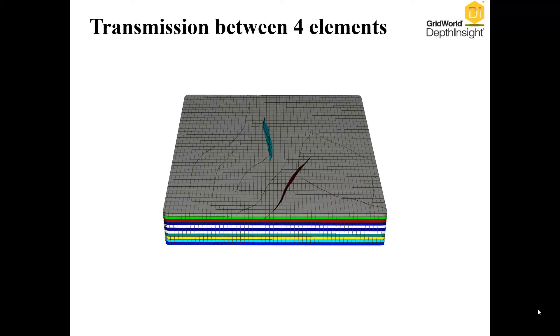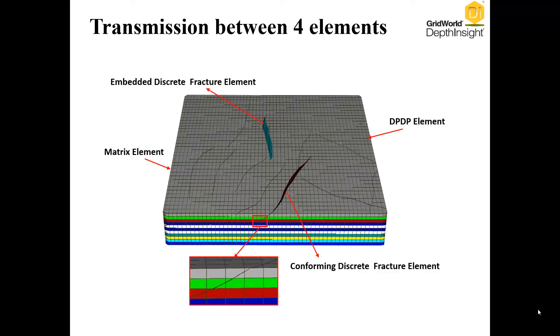Therefore, the whole model includes four types of elements: matrix, dual porosity and dual permeability, embedded discrete fracture, and conforming discrete fracture.